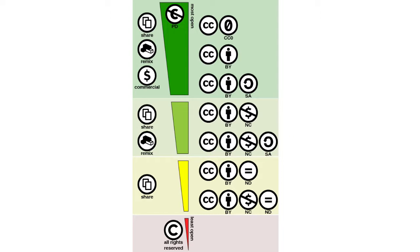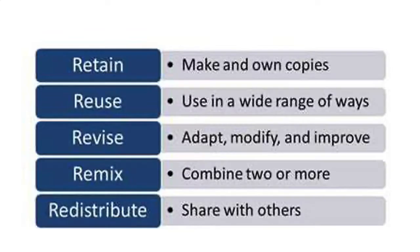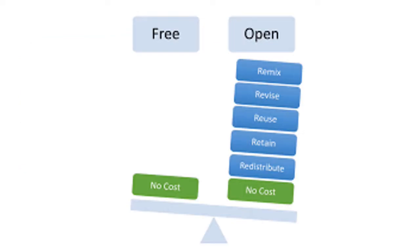The key components necessary for substantive pedagogy changes that go beyond saving students money are remixing and sharing. There are five R's to OER that can allow for changes in pedagogy: retain, reuse, revise, remix, and redistribute. Generally, you cannot legally do these things to copyrighted materials. This is why open means so much more than free — a material can be free but not allow any of the permissions afforded by those five R's.